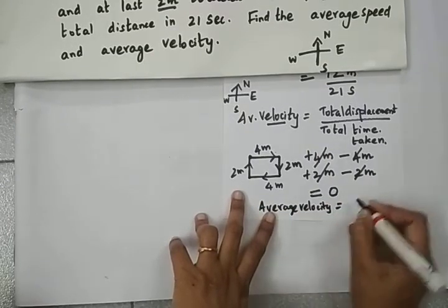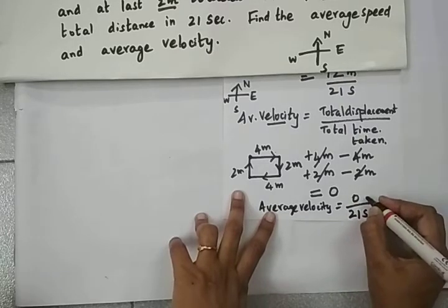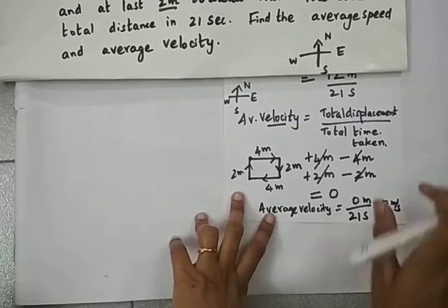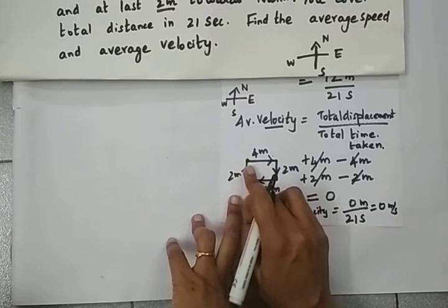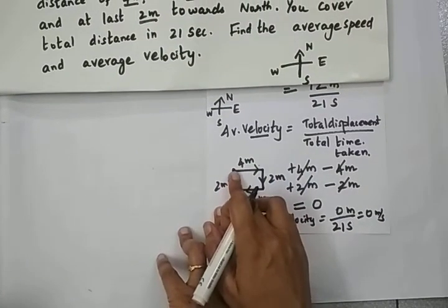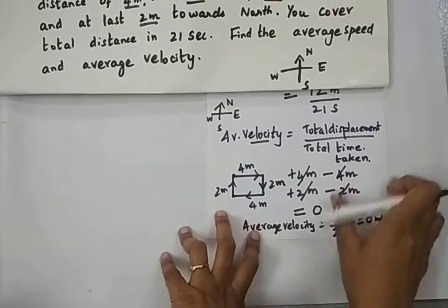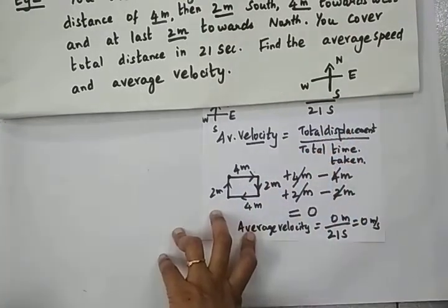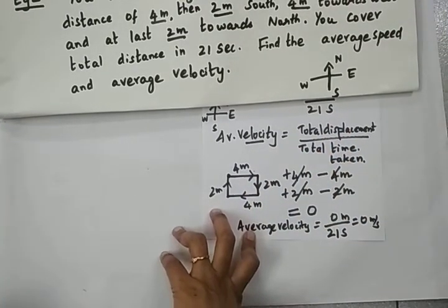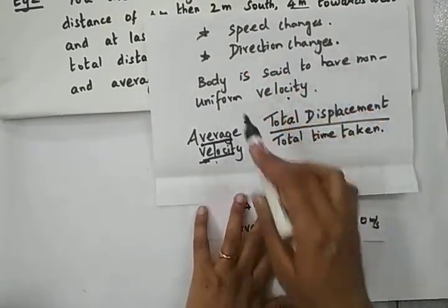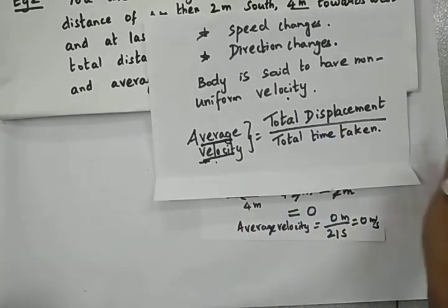So average velocity is total displacement divided by total time taken = 0 meters divided by 21 seconds = 0 meters per second. Average velocity is 0 because the initial and final positions are the same, so there is no change in displacement. On road, a car or any moving body will have changes in speed and direction, so we calculate the average velocity using the formula: total displacement divided by total time taken.